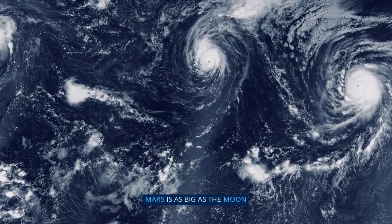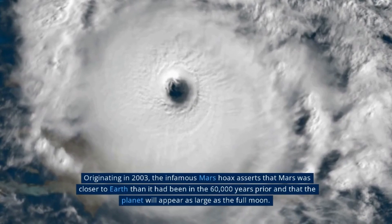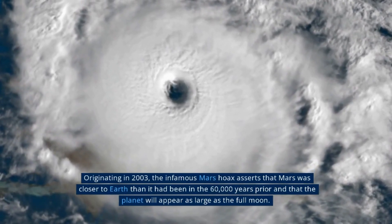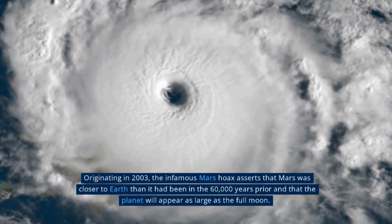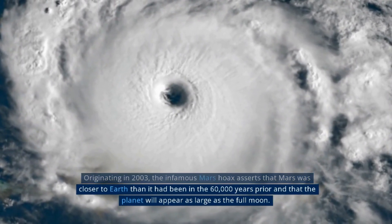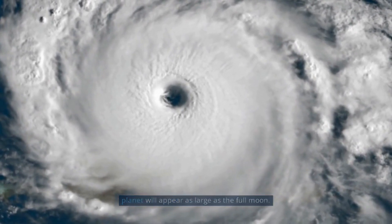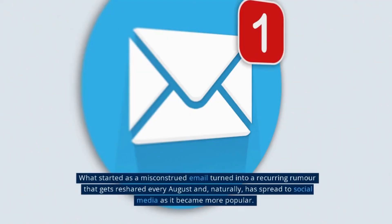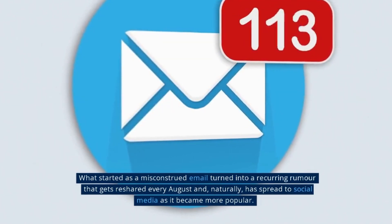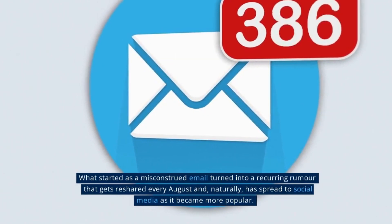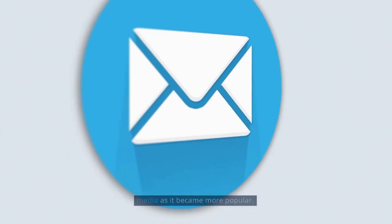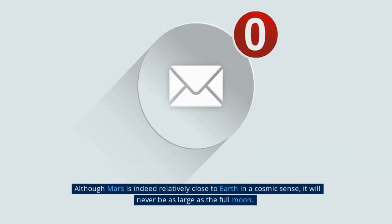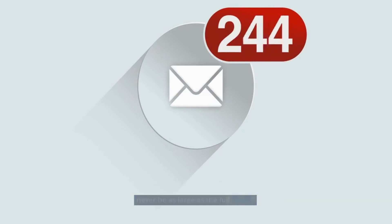Mars is as big as the Moon. Originating in 2003, the infamous Mars hoax asserts that Mars was closer to Earth than it had been in 60,000 years prior, and that the planet will appear as large as the full Moon. What started as a misconstrued email turned into a recurring rumor that gets reshared every August, and naturally has spread to social media as it became more popular.